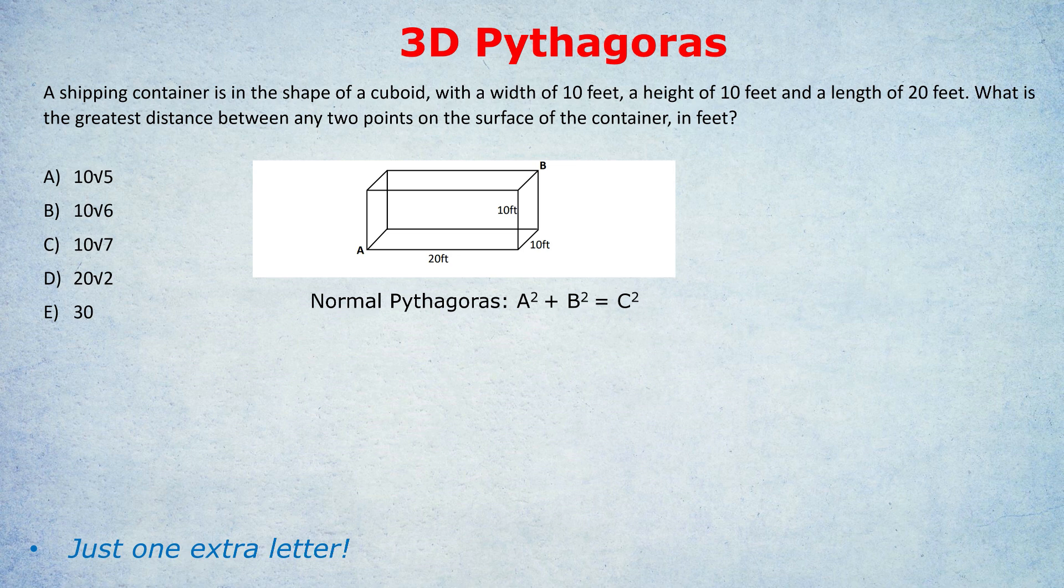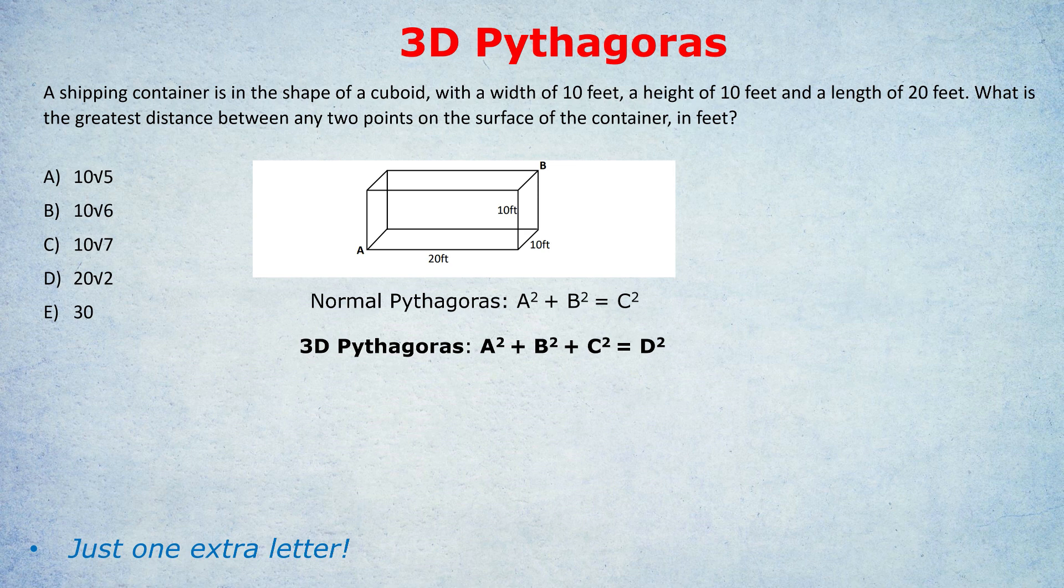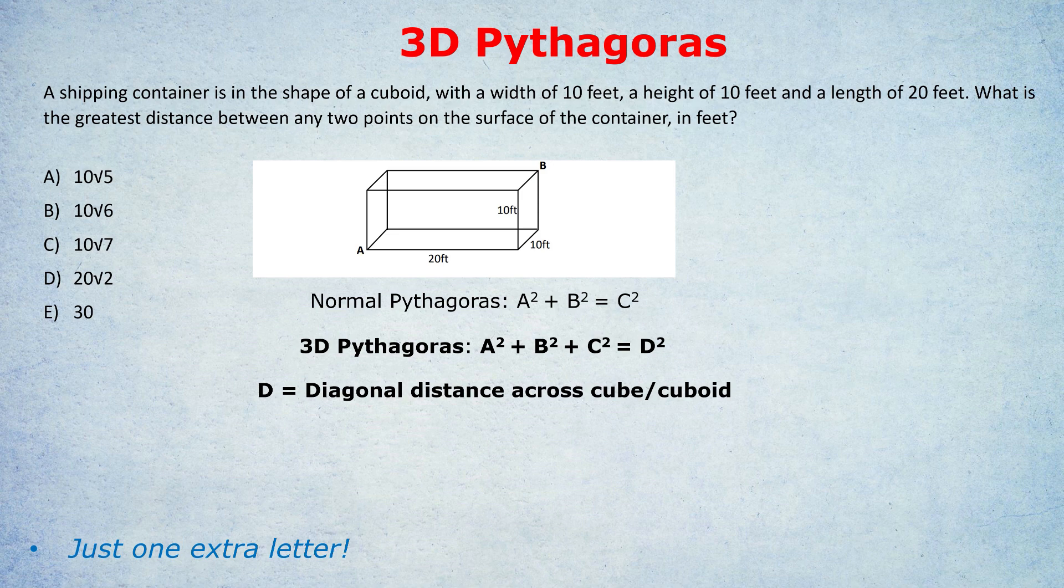But here's the trick. With three-dimensional Pythagoras, it's actually the same thing as I've written, just with one extra letter. So three-dimensional Pythagoras is A squared plus B squared plus C squared, where that's the width, length, and height in any order by the way, equals D squared. What's the D stand for? It's the three-dimensional hypotenuse, or you can think of it as the diagonal distance, the three-dimensional diagonal distance across the cube through the center, not along the surface, right through the center from A to B.